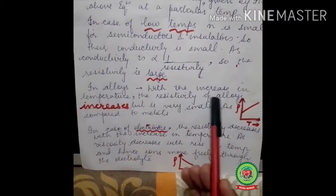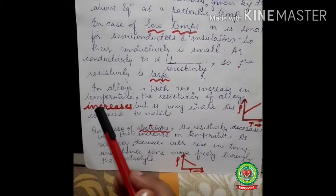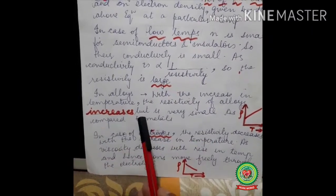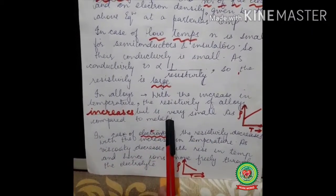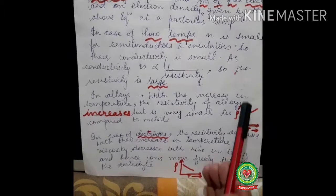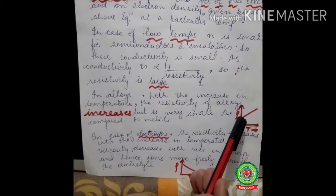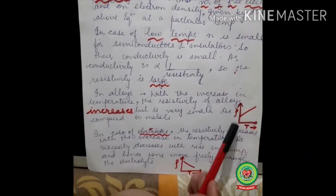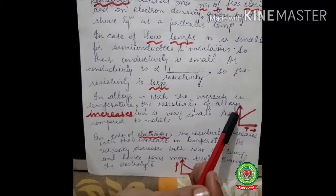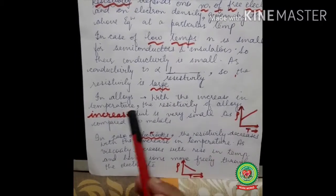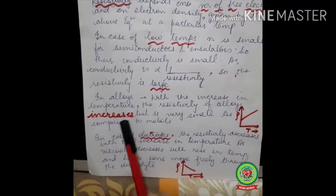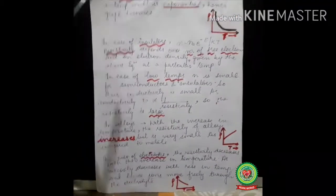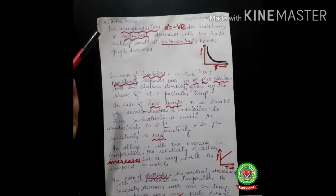In the case of alloys, resistivity also increases with the rise in temperature, but only by a very small amount compared to metals. The graph shows a straight line going upward, but with a very small slope, indicating a small rate of increase in resistivity with temperature.